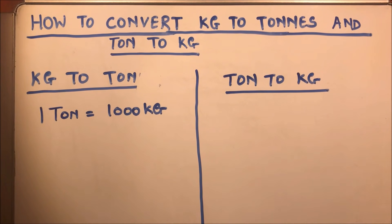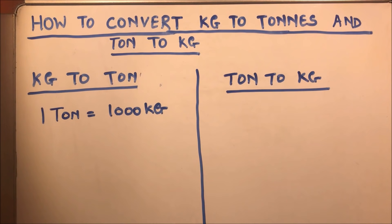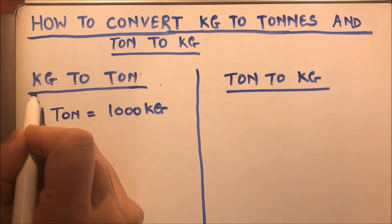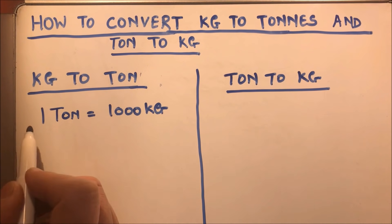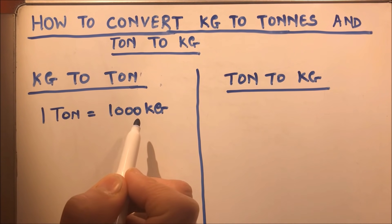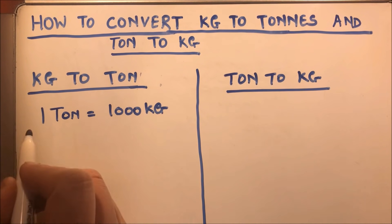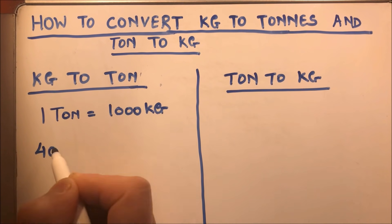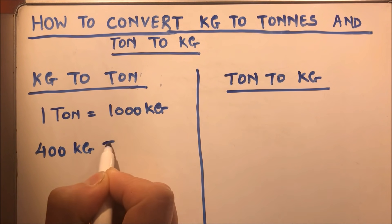Hello viewers, today we are going to learn how to convert kilograms to tons and tons to kilograms. First, we'll learn how to convert kilograms to tons. The basic relation between ton and kilogram is: one ton is equal to one thousand kilograms. So let's suppose we need to convert four hundred kilograms to tons.